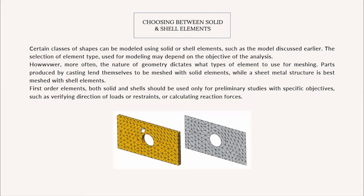As we discussed before, there are two main types of elements available for finite element analysis. The topic is about choosing between solid and shell elements. Certain classes of shapes can be modeled using either solid or shell elements. The selection of element type may depend on the objective of analysis, but more often the nature of geometry dictates what type of element to use. Machine parts produced by casting lend themselves to be meshed with solid elements.